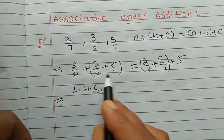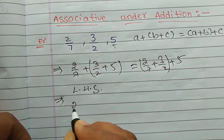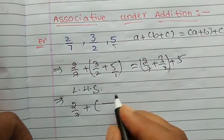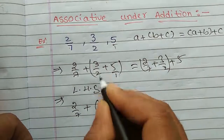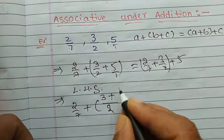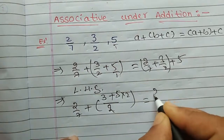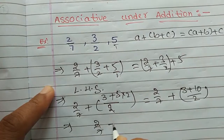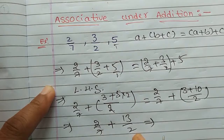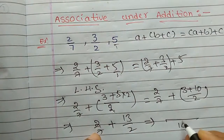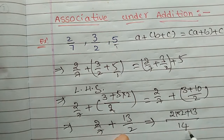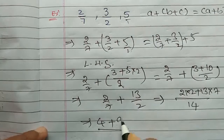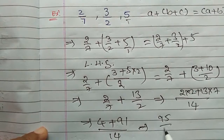Now LHS — left hand side. LHS: (2/7 + 3/2) + 5/1. LCM of 2 and 1 is 2, so 3/2 + 5/1 = (3 + 10)/2 = 13/2. Wait, computing 3/2 + 5/1: LCM is 2, giving (3 + 10)/2 = 13/2. Then 2/7 + 13/2: LCM of 7 and 2 is 14, giving (4 + 91)/14 = 95/14. So LHS = 95/14.